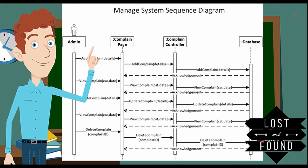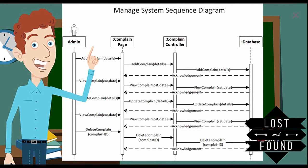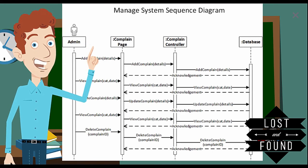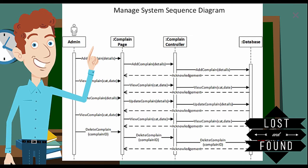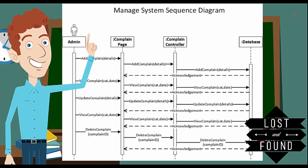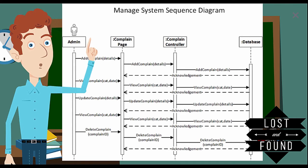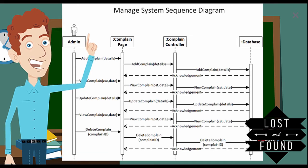In this sequence diagram, the admin can perform CRUD operations — addition, update, delete. The admin can add a complaint using the add complaint method with parameter item details; the system then gives an acknowledgement message. To update, the admin first views the complaint using the view complaint method, then performs the update complaint method with parameters item details and complaint ID. To delete, the admin first views the complaint, then performs the delete complaint method with parameter complaint ID.